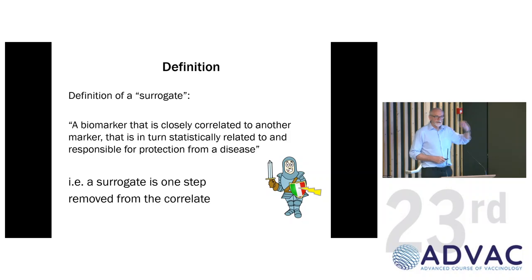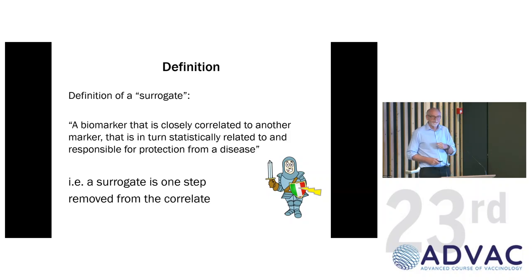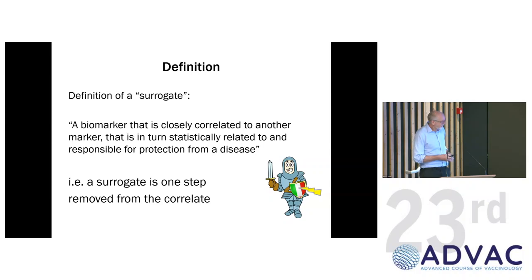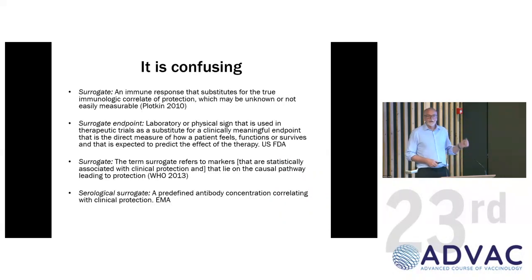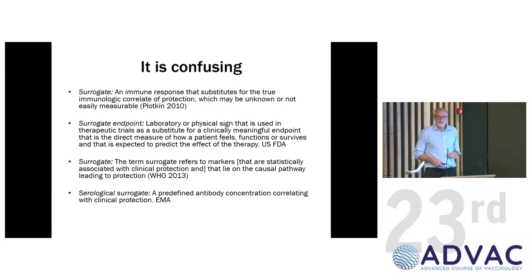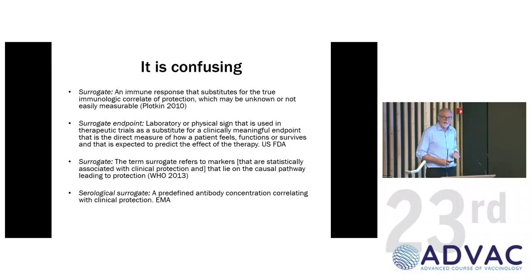Surrogates are another commonly used word when talking about correlates, and it's important to explain how confusing this is. A surrogate is generally thought to be something statistically related to a correlate — something you can measure easily that gives you an idea about a correlate of protection, but it's not the correlate itself. It's one step removed. The problem is that the definition of a surrogate is different in different jurisdictions. The European Medicines Agency essentially defines the surrogate as being the same as the correlate, whereas the FDA correctly uses correlate to mean a correlate. It's really important when reading the literature to understand what you're actually reading about.